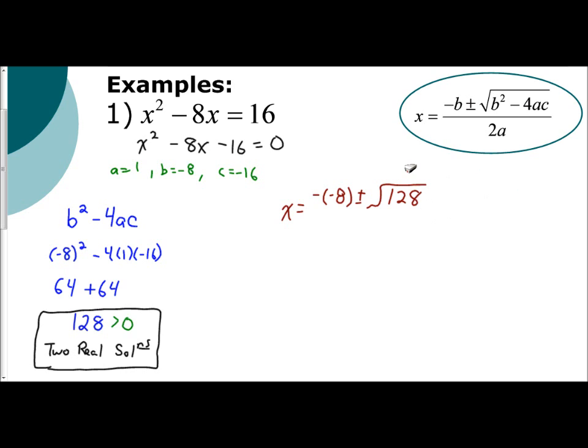And so you can just plug in right away 128. Now that's nice because then you don't have a lot of numbers and parentheses inside the radical. It's neater. It's cleaner.